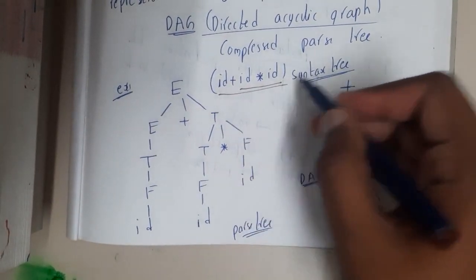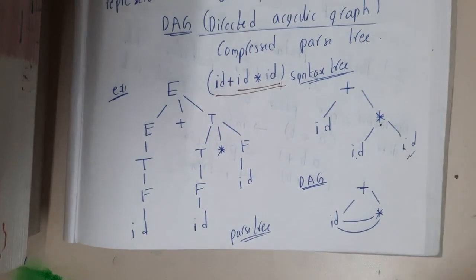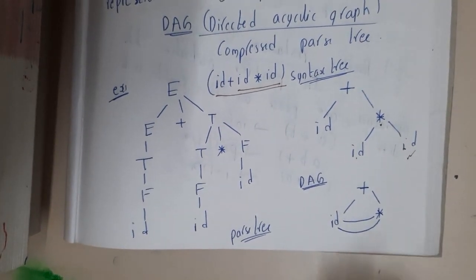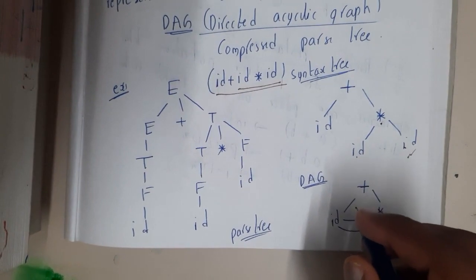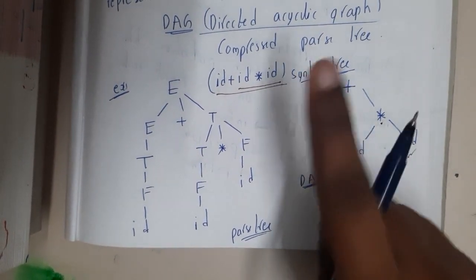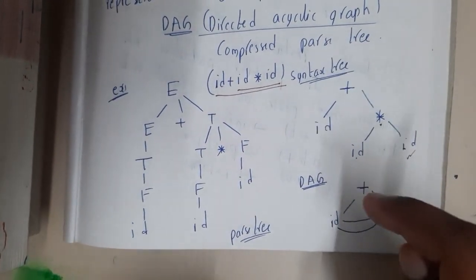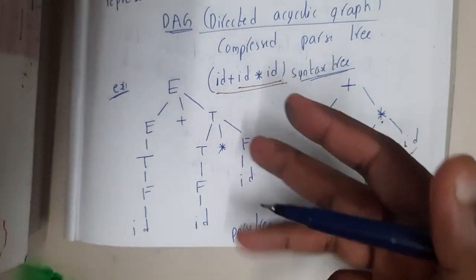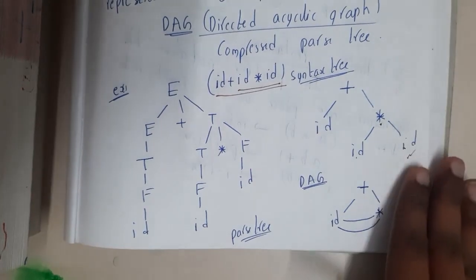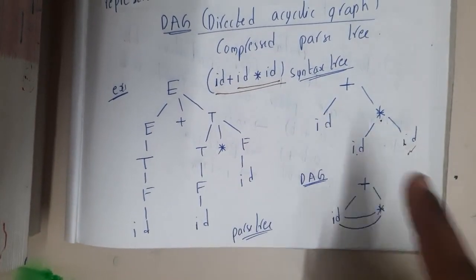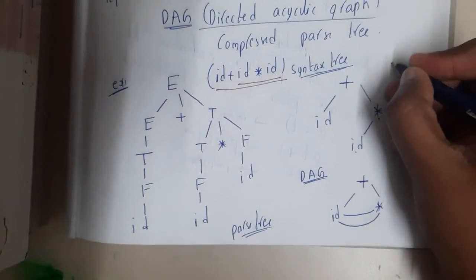Similarly, DAG. The only thing that you should remember is in a DAG, for each and every variable you'll be defining only once. If there is a change in it, you'll be defining it multiple times, else if there is no change in the value, then only once you'll be defining.